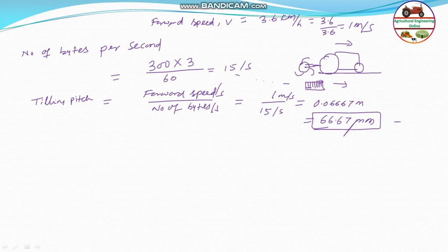Now coming to the second part, we need to find the specific work. First we find the power required for the cultivator. We can either directly calculate the work done for one revolution, or calculate total power. The power required is given by 2πNT divided by 60,000 in kilowatt.